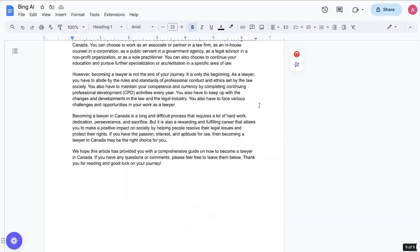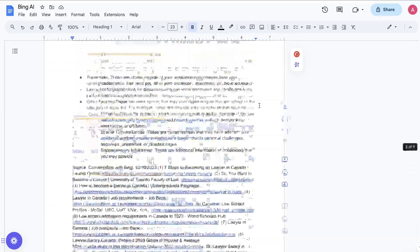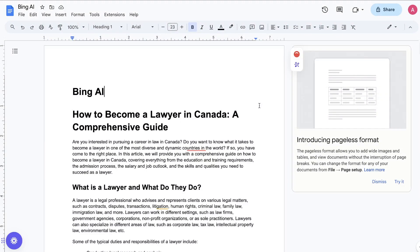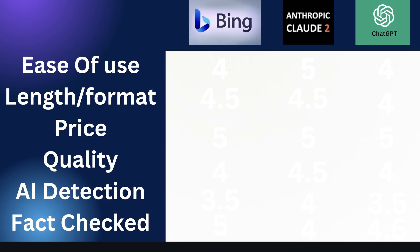So overall, we were able to get three pretty in-depth and high-quality pieces of content from Bing AI, Claude 2, and ChatGPT. So now let's go ahead and score these AI writers based upon the criteria that we've determined. Each one of these criteria is going to be out of 5, so 5 is going to be the highest and 0 out of 5 is going to be the lowest.